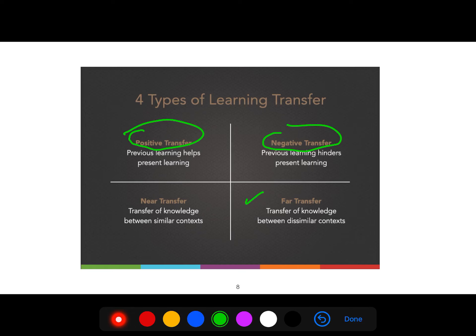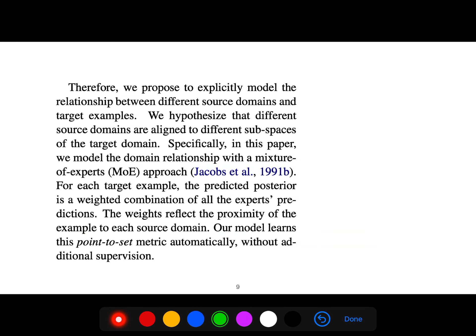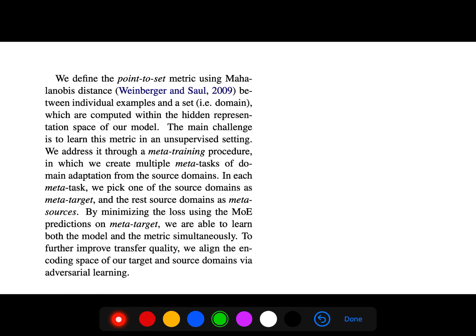Therefore we propose to explicitly model the relationship between different source domains and target examples. We hypothesize that different source domains are aligned to different subspaces on the target domain. Specifically, in this paper we model the domain relationship with a mixture of experts. For each target example, the predicted posterior is a weighted combination of all experts' predictions. The weights reflect the proximity of the example to its source domain.